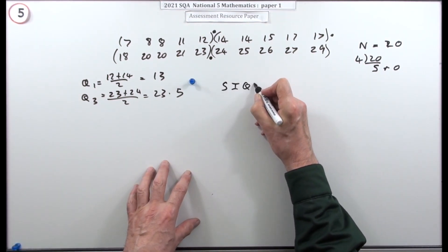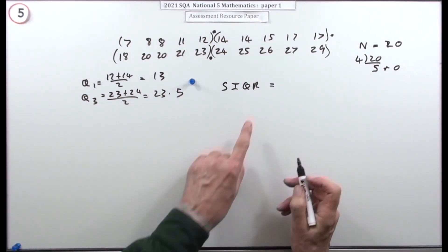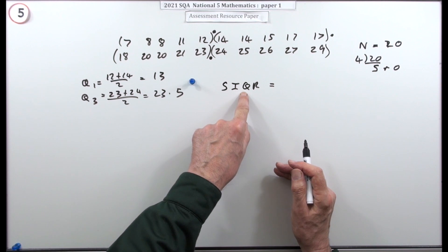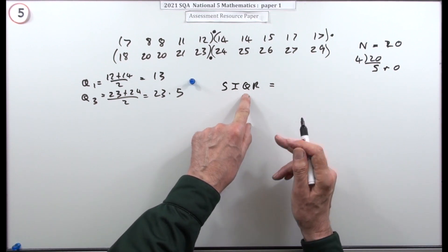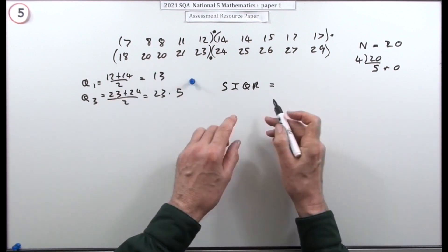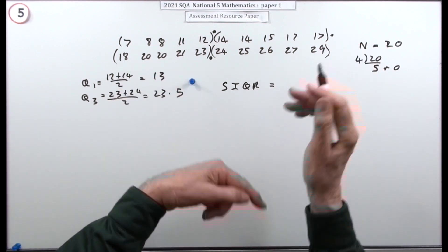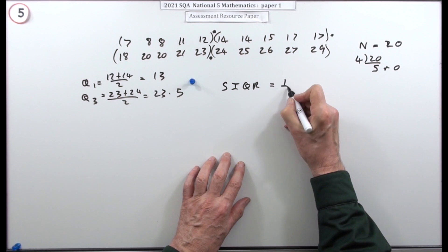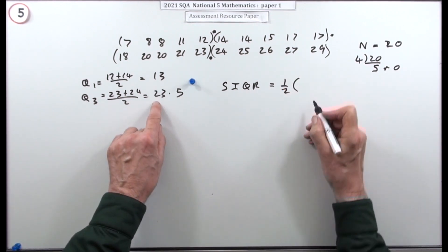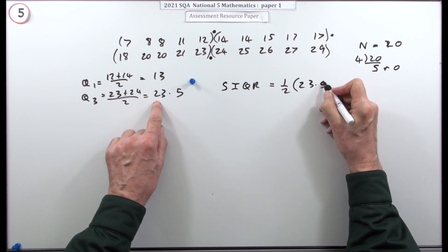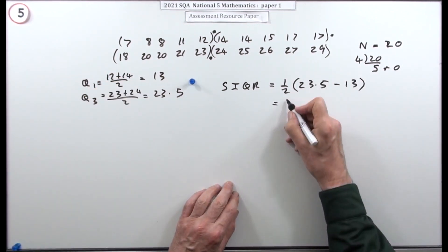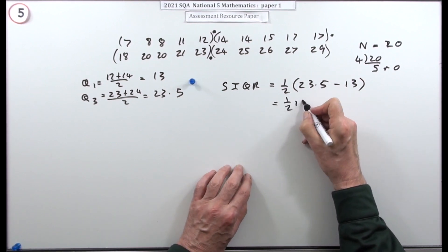Semi-interquartile range: range means the difference between the highest and lowest, but it's the quartile range, so it's the difference between the highest and lowest quartiles. Semi means half of that, so it's half the difference between the highest and lowest quartiles.